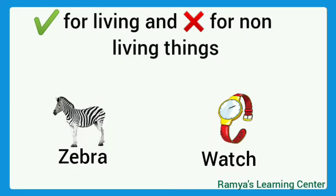Next: zebra and watch. Zebra is a living thing, tick it. And watch is a non-living thing, cross it.